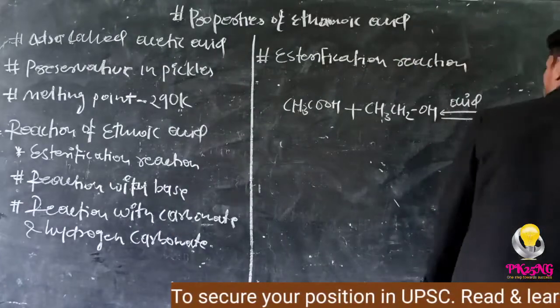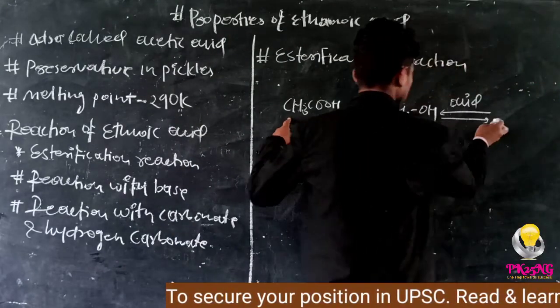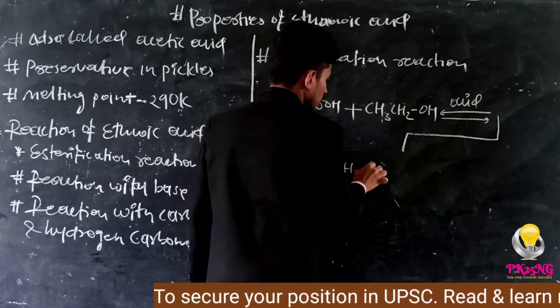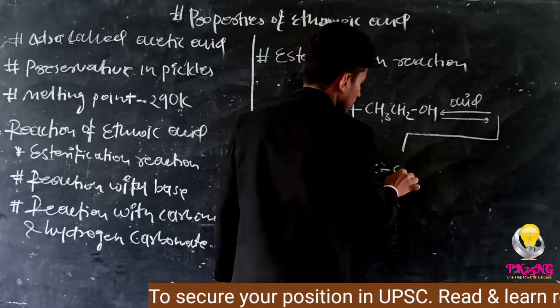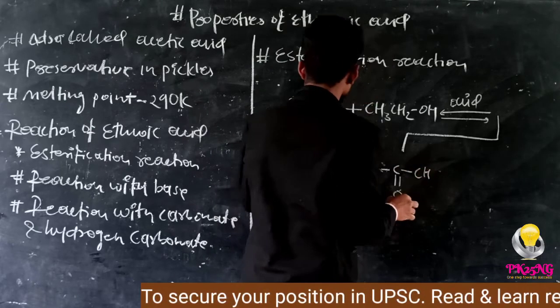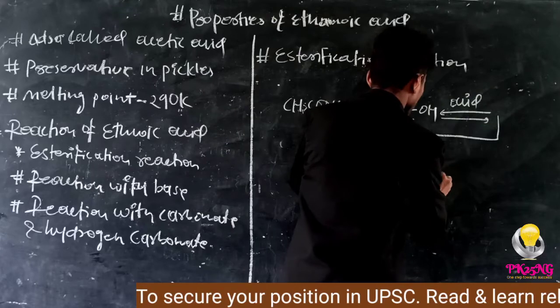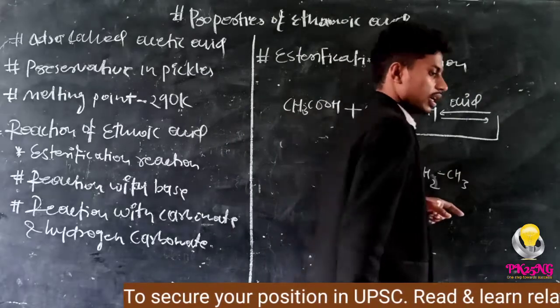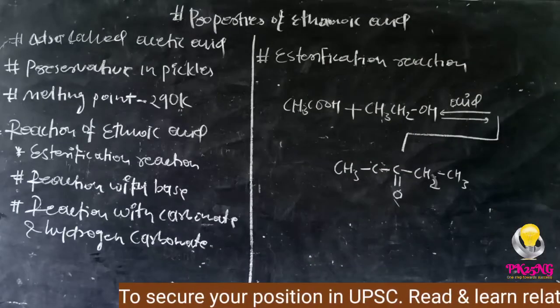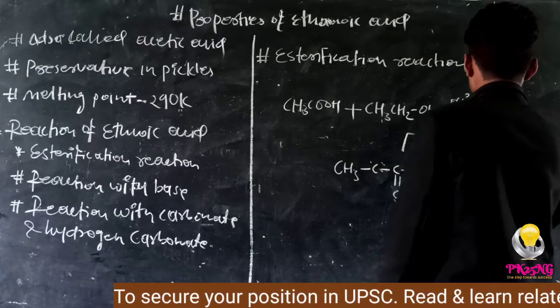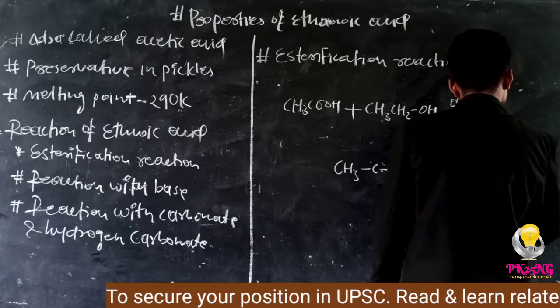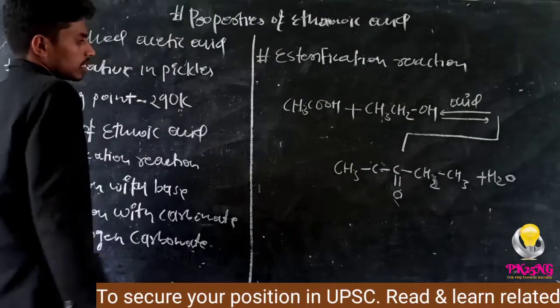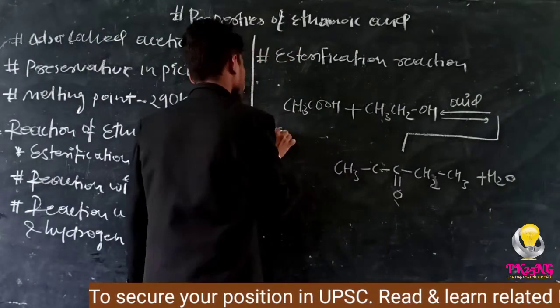So what will happen in esterification? It will form this product. The product I am writing below because there's no space here. So it will be CH3, then carbon, then again carbon double bond oxygen, after that O, then CH2 and CH3. You should not have any difficulty up to here. And after this H2O is released separately.